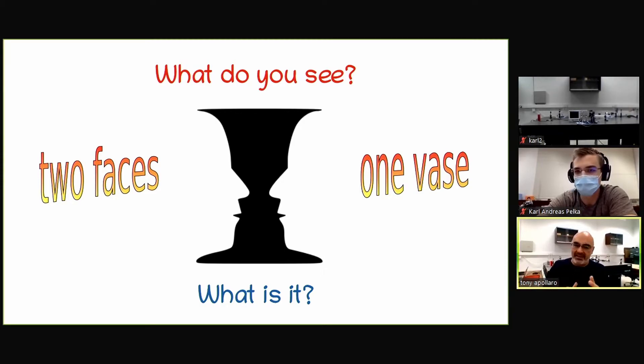If you keep the black as a background, one sees two faces. If you keep the white as background, you see one vase. But can you see both at the same time? So what is this image? And now this somehow is a pictorial representation of wave-particle duality.